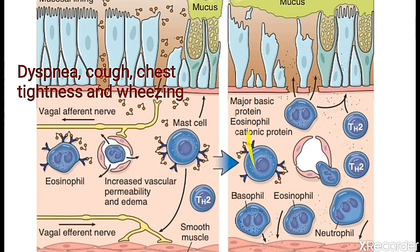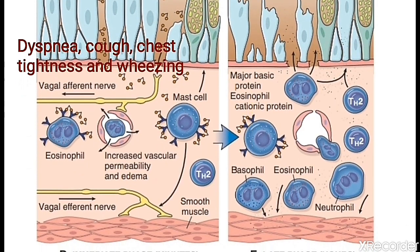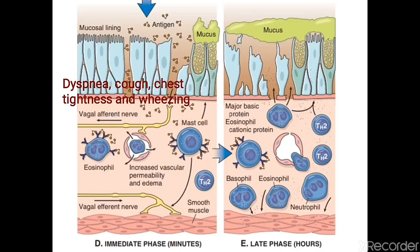Mast cells release mediator substances that stimulate vagal nerve fibers, causing bronchoconstriction, and also release leukotrienes C4, D4, E4 — causing smooth muscle hyperplasia, edema, and mucous production — along with prostaglandin D2. This constitutes the early phase reaction of asthma.